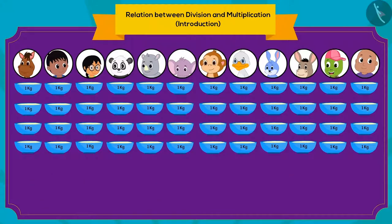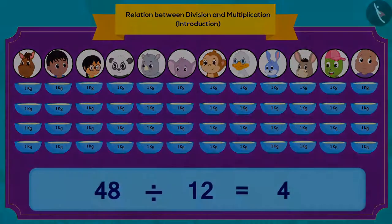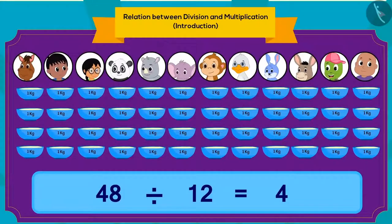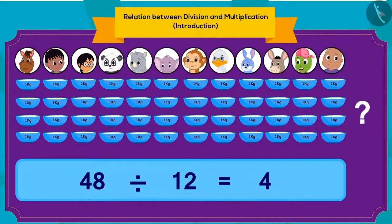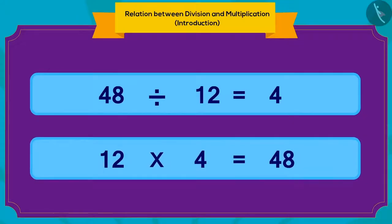How can we write this using division? We can write it like this using division. Children, can you write this division in the form of multiplication? You can pause the video and find the answer. If there are 12 people and each person gets 4 kg of kheer, then the total quantity of kheer is 48 kg.